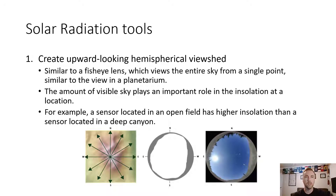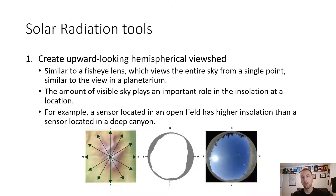Step one is to create an upward-looking hemispherical viewshed — similar to a fisheye lens that views the entire sky from a single point, like the view in a planetarium. Imagine a single point that can see all 360 degrees around it. The amount of visible sky plays an important role in insolation at any location — for example, a sensor in an open field has a higher insolation value than a sensor in a deep canyon. It also matters whether the location is surrounded by dense tall trees or low shrubs. The amount of sky visible from a location is the first component in creating the hemispherical viewshed.